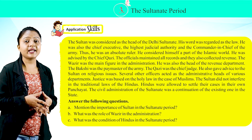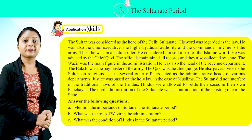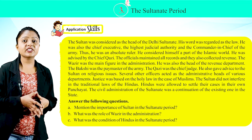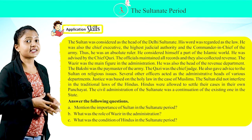The officials maintained all records and collected revenue. The wazir was the main figure in the administration and also the head of the revenue department. The bakshi was the paymaster of the army. The Qazi was the chief judge and also gave advice to the Sultan on religious issues. Several other officers acted as administrative heads of various departments. Justice was based on holy law in the case of Muslims.